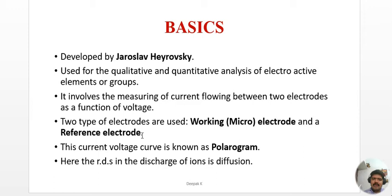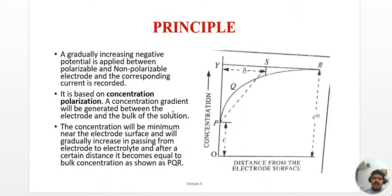A gradually increasing negative potential is applied between the polarizable and non-polarizable electrodes, and the corresponding current is recorded. This method is based on concentration polarization, which arises due to the concentration gradient formed by diffusion of ions from the bulk of the solution to the electrode surface, forming a concentration cell. The concentration is minimum near the electrode surface and gradually increases toward the bulk.